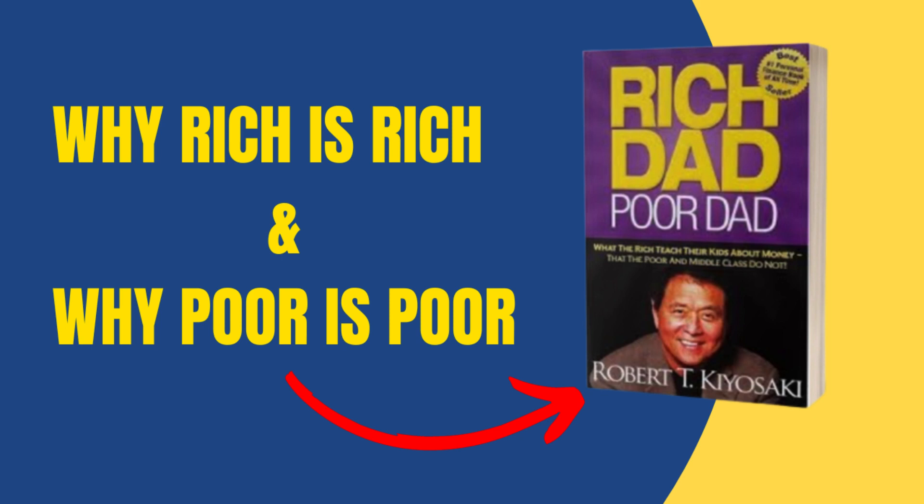The alternative way, as taught by the Rich Dad character in the book, involves developing financial intelligence, taking control of your financial future and building wealth through multiple streams of income and smart investments.